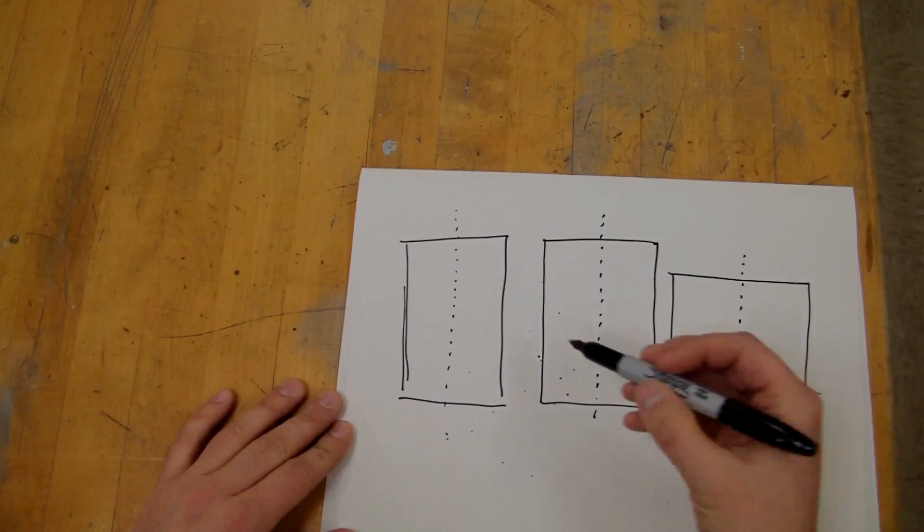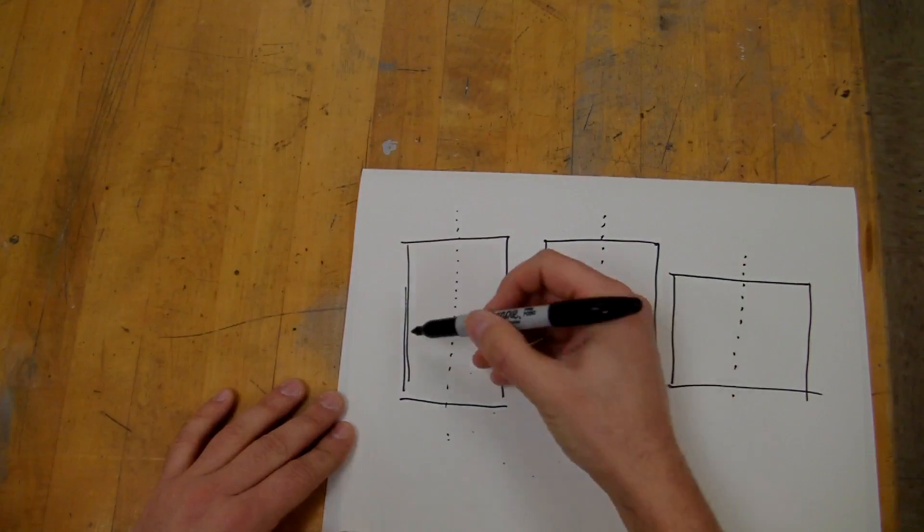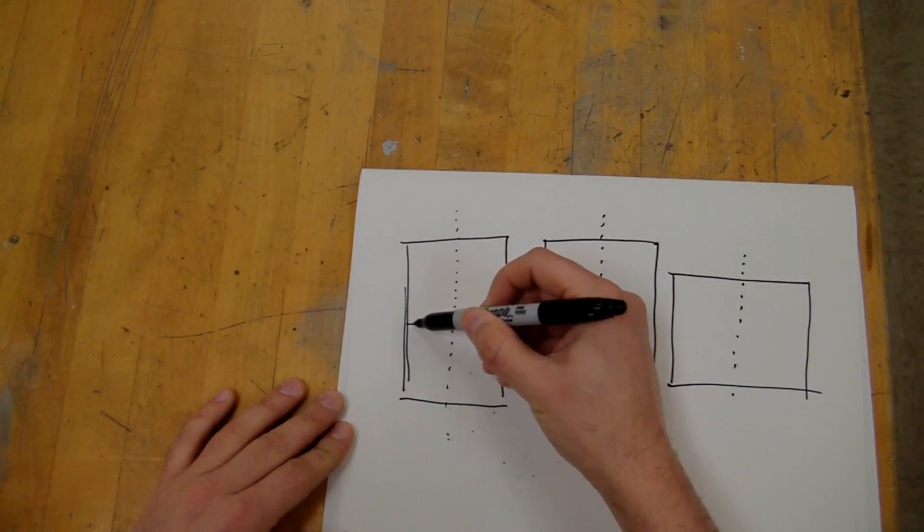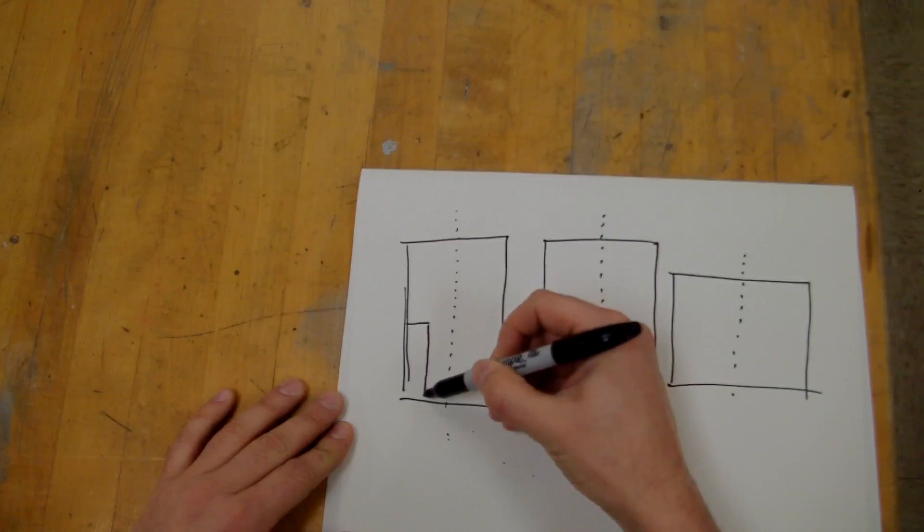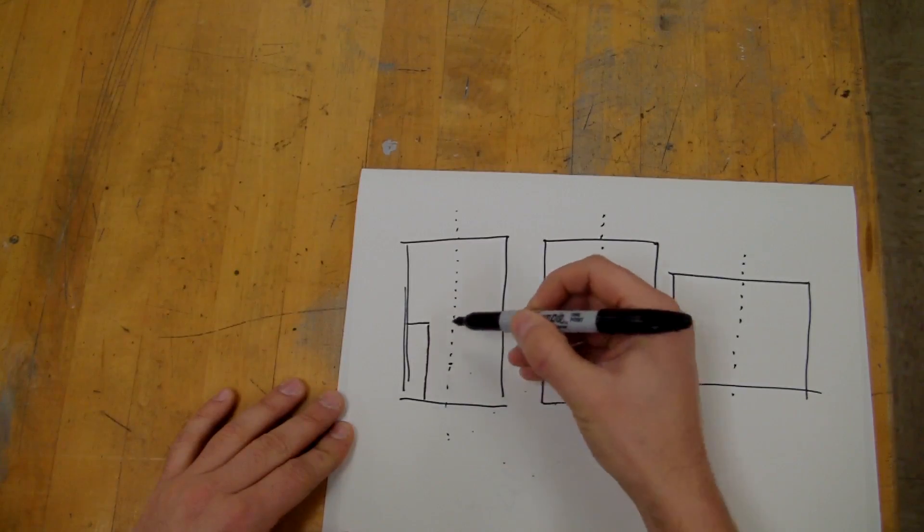So let's just start this out. Maybe this one I'll do like a cityscape. So over here I'm going to do, you know, I'll make sure that my vanishing point's right there.